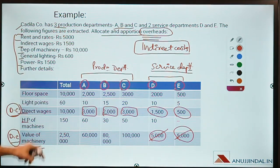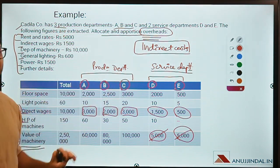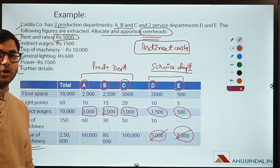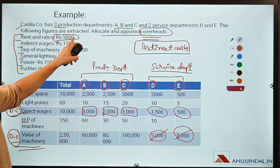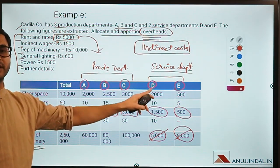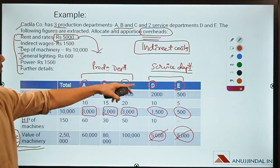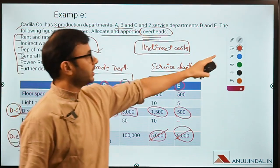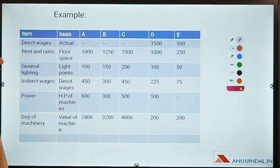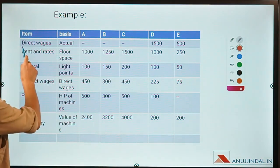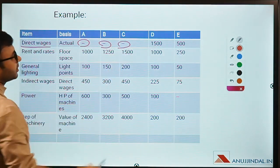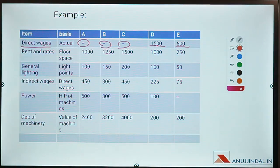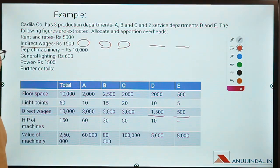The responsibility of the cost accountant is to allocate this to the service department — how much of this 5000 will be the responsibility of department D, how much will be the responsibility of department E, and so forth. Direct wages will not be allocated for A, B, and C because it is a direct expense, but for D and E, whatever expenditure is done on direct wages — 1500 and 500 — is an indirect expense and will be allocated in the same proportion.